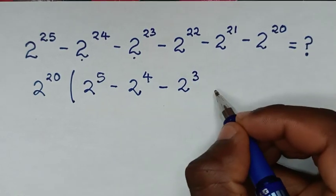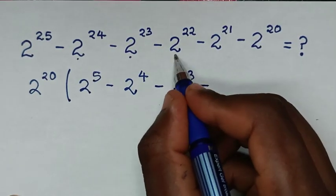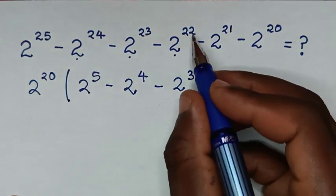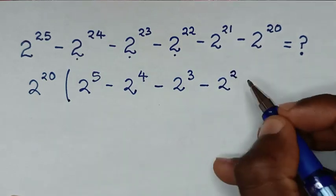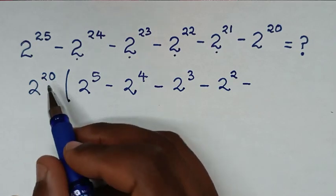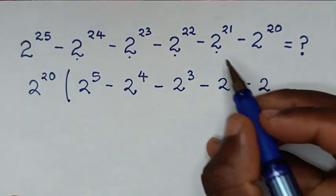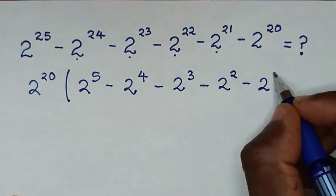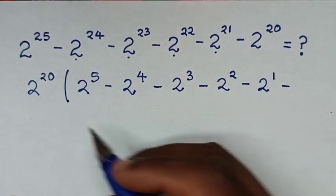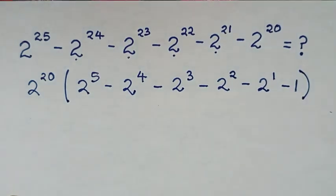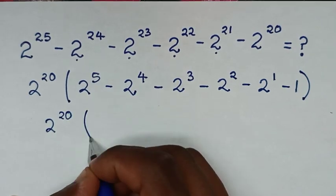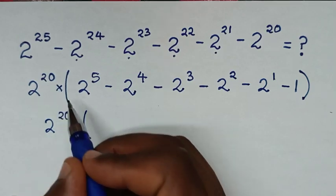Then minus: 2 power 22 divided by 2 power 20 is 2 power 2. Then minus: 2 power 21 divided by 2 power 20 is 2 power 1. Then minus: 2 power 20 divided by 2 power 20 is 1. Then bracket closes. So we have 2 power 20 times bracket.